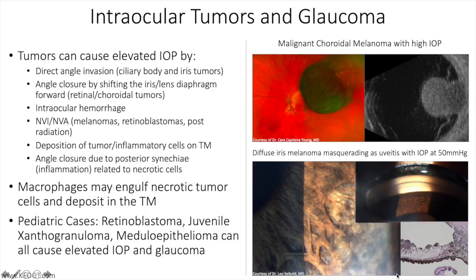Intraocular tumors can cause elevated IOP by direct angle invasion, as is the case with metastatic seeding into the eye, primary ciliary body, or iris tumors. Angle closure by shifting the iris-lens diaphragm forward can occur with retinal or choroidal tumors as well as ring melanomas. Additional mechanisms include intraocular hemorrhage with mechanical plugging of the outflow system, and pigment plugging of the trabecular meshwork originating from melanomas or melanocytomas.